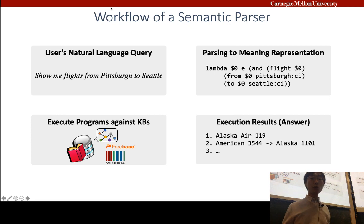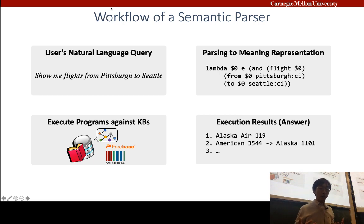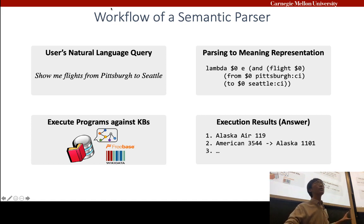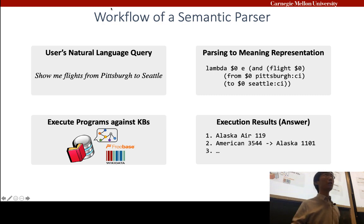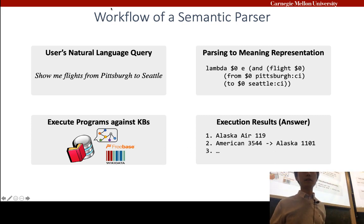The general workflow of a semantic parser: the user gives a query, the parser translates it into a machine-executable program, and we execute the program against a knowledge base — for example, a database of flight information — returning a list of flights from Pittsburgh to Seattle. This is one application of neural semantic parsers in conversational AI agents.